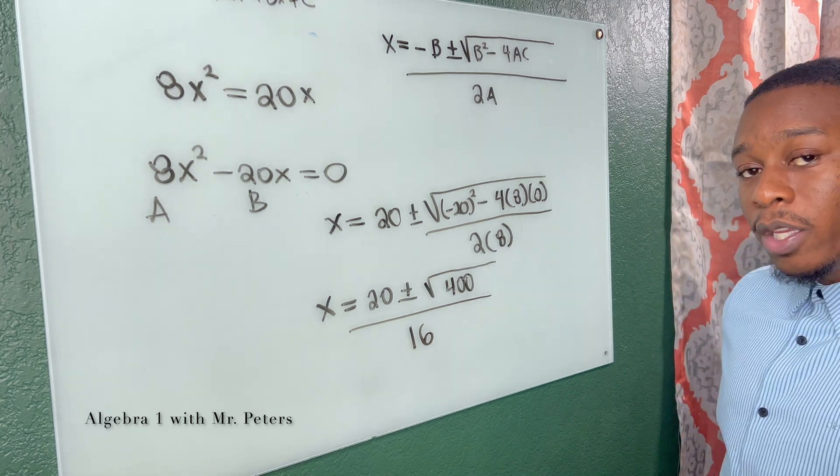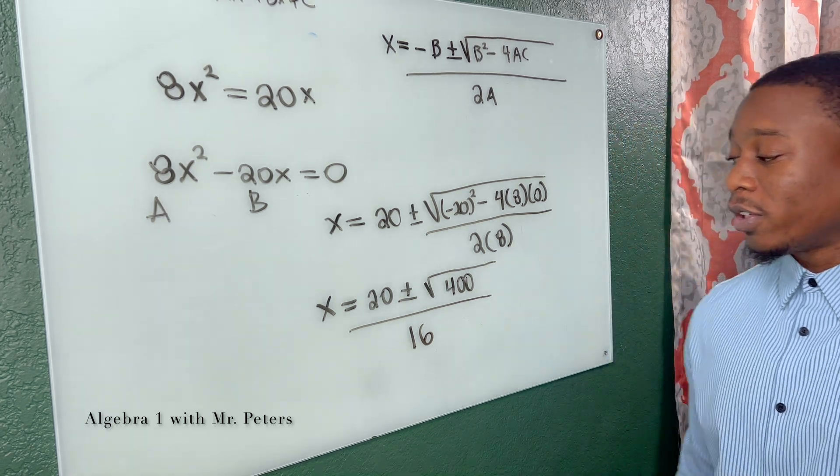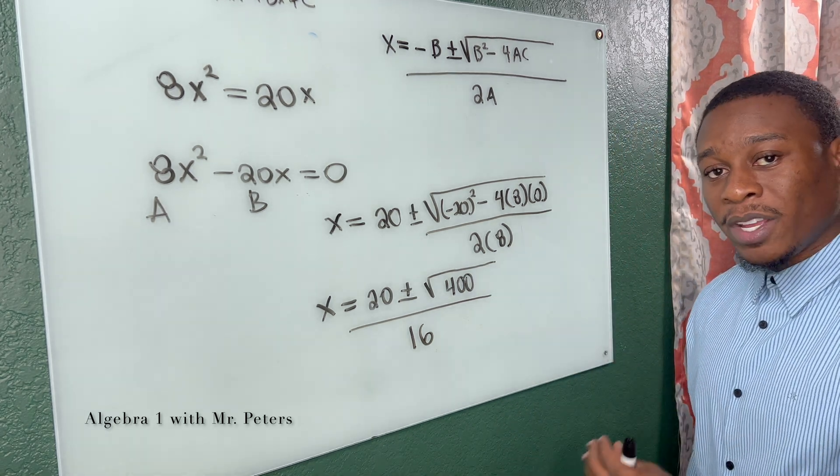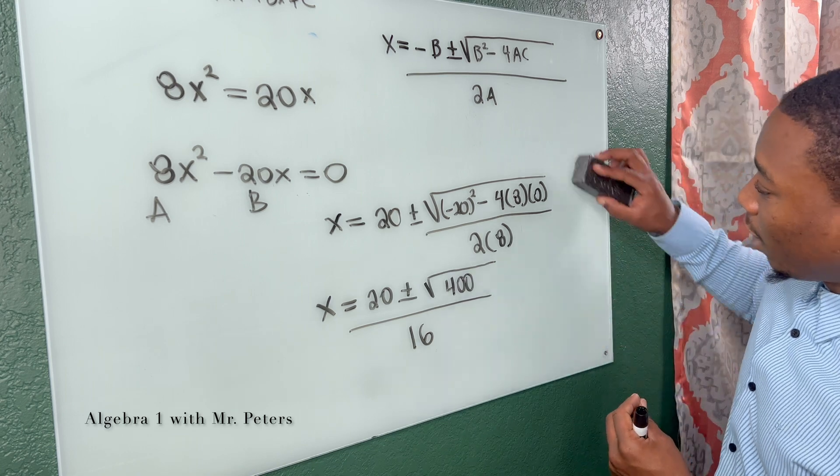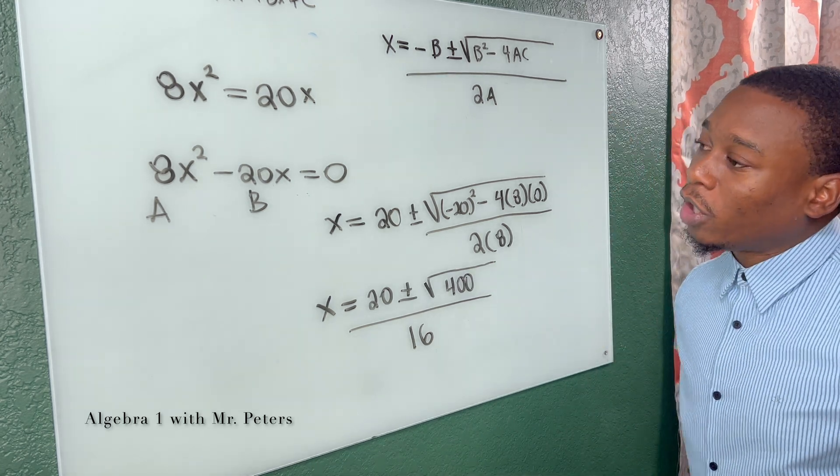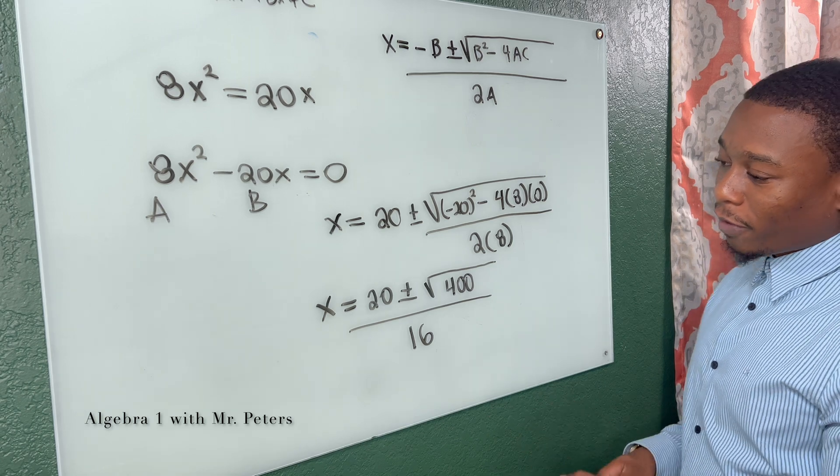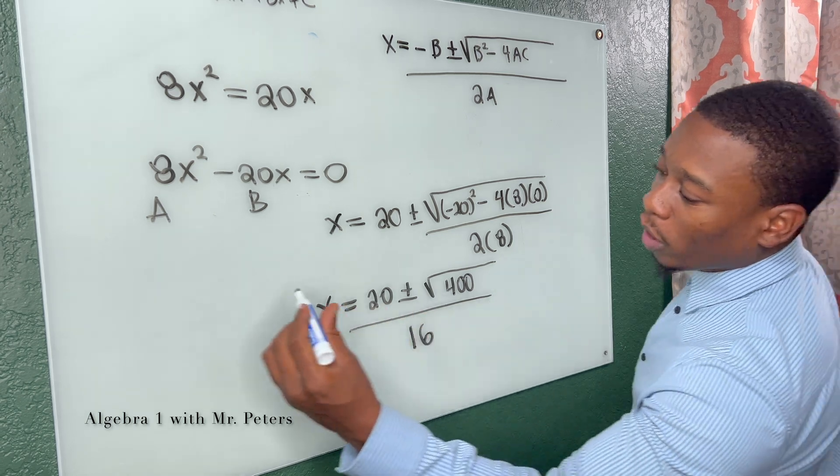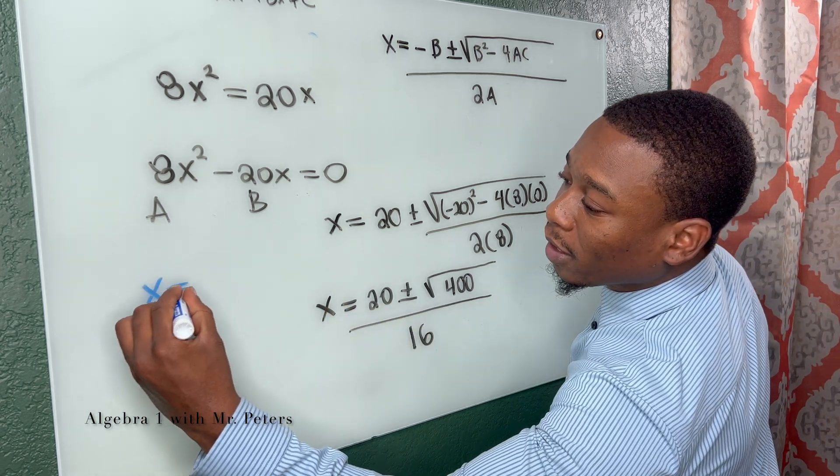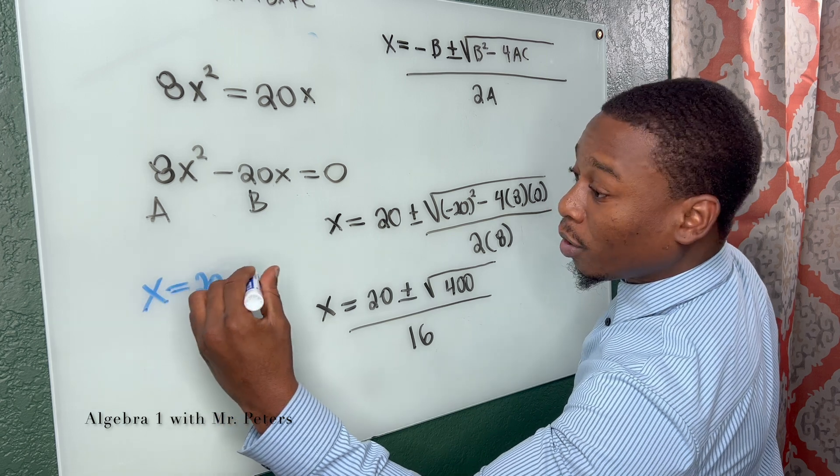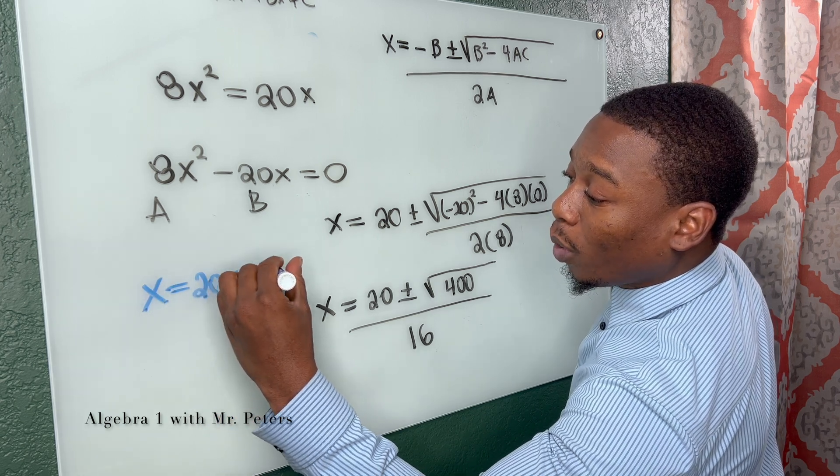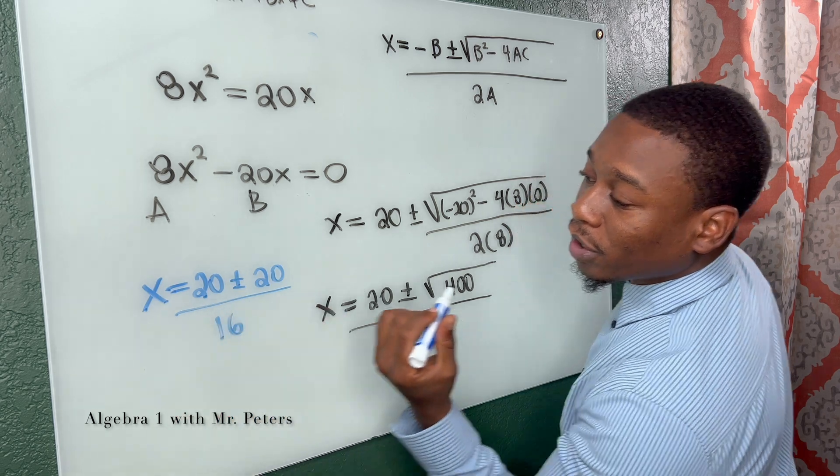And what we're going to have now is x is equal to 20 plus or minus, let's make sure we get this right, the square root of 400 all over 16. So the fortunate thing for us, guys, is that this is a perfect square. So I can show you the solution set as well.